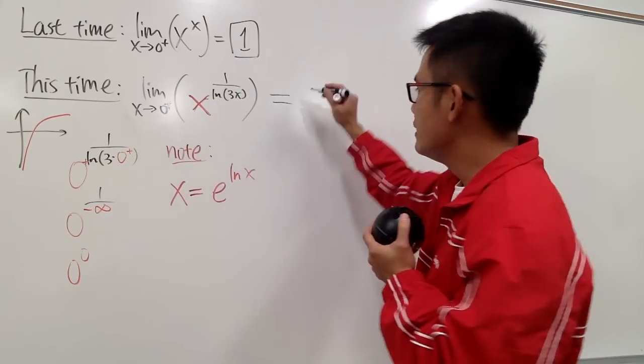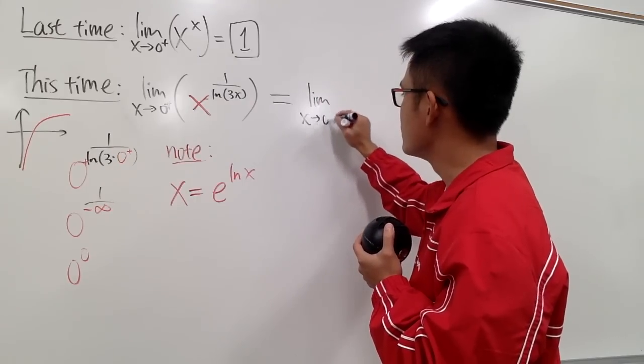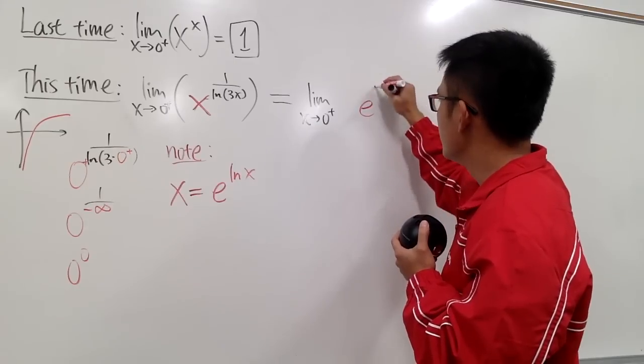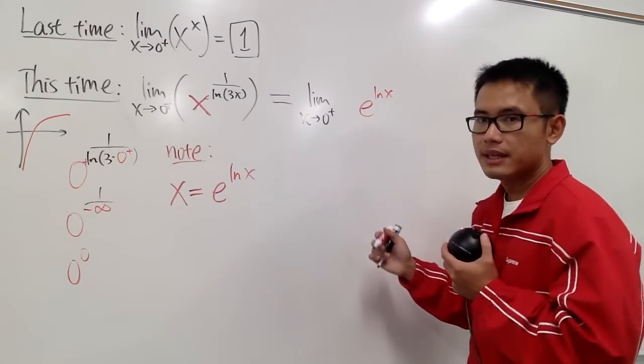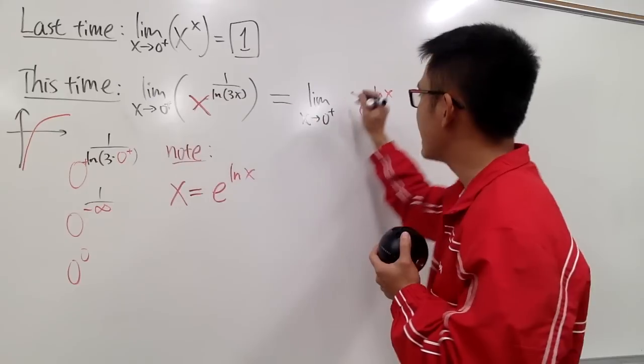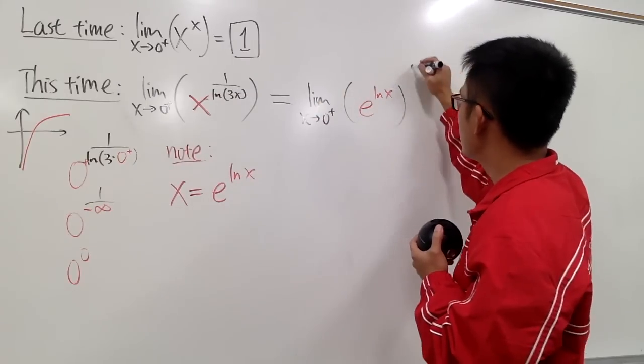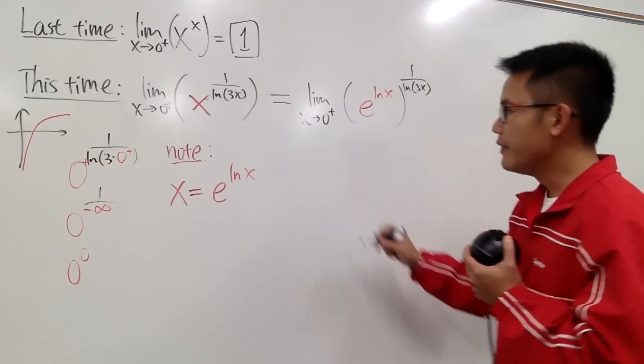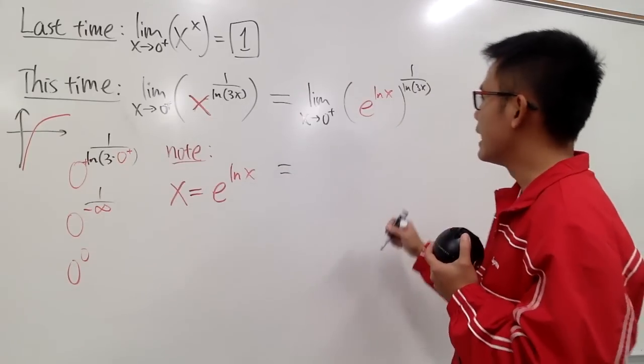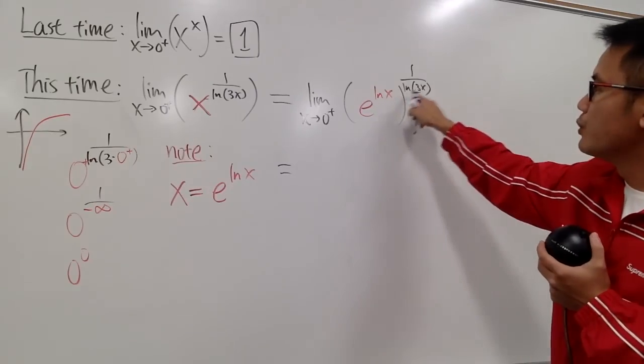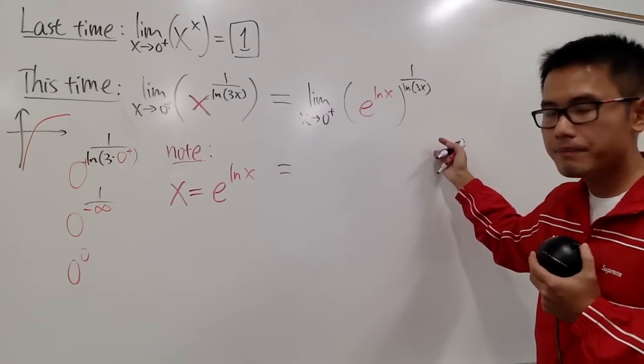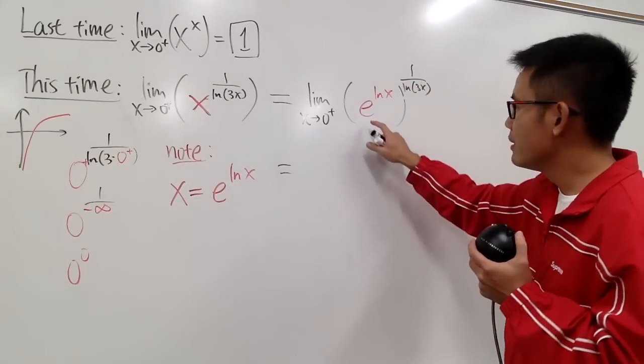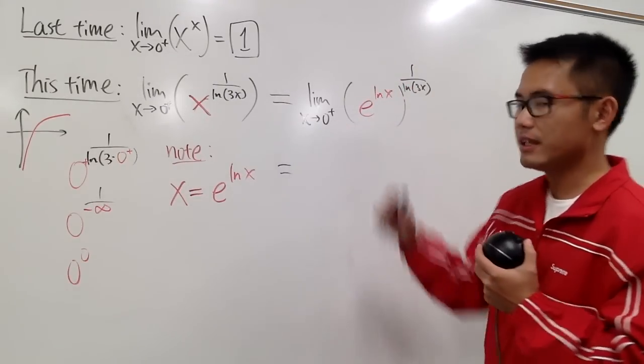Anyway, this is going to be the limit as x goes to 0 plus. This x is that, namely, e to the ln x, like this. And don't forget, we still have to raise that to the 1 over ln of 3x power, like that. And now, we see that we are just going to multiply the powers together. And here are the variable parts, the function part. The base is just the number e now. And we'll have to take the limit.